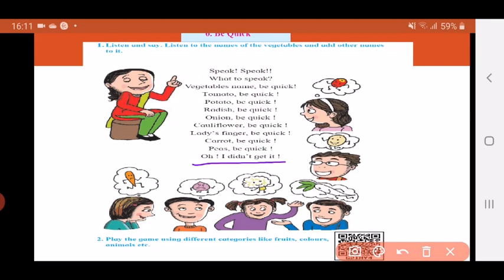So how does this game go children? The first person will announce what we are supposed to speak about. Like here she says vegetables names, be quick. And then one after the other each person has to give the name of the vegetable and say be quick. And the turn goes to the next person. We'll keep playing this game till we reach someone who doesn't know any other name of a vegetable. And remember you cannot repeat the names again. If the name is said you can't say it again. You have to think of a new vegetable.